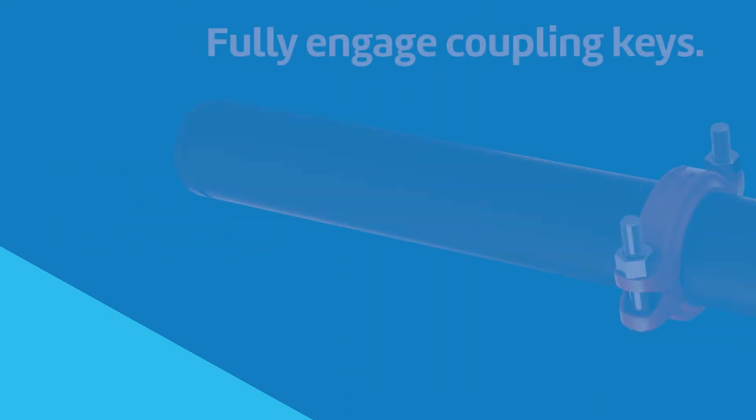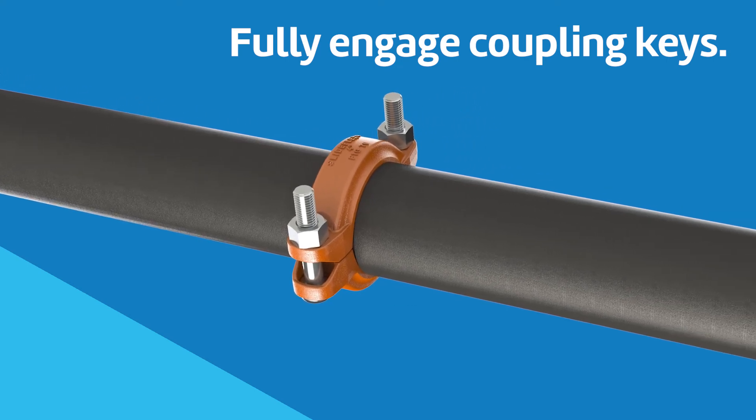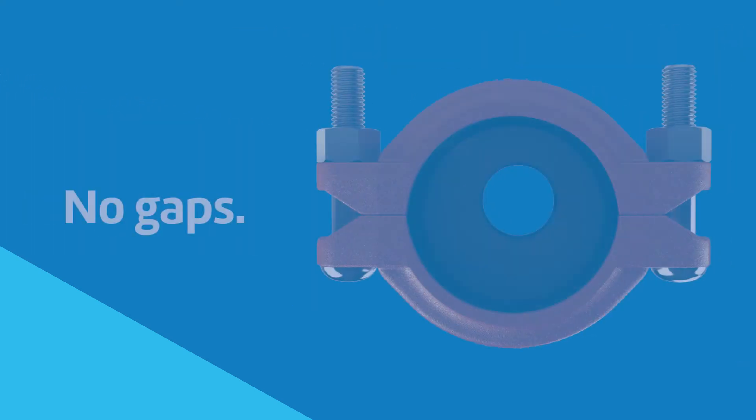Visually inspect the pipe joint to assure the coupling keys are fully engaged in the pipe grooves. The bolt pads must have metal-to-metal contact.